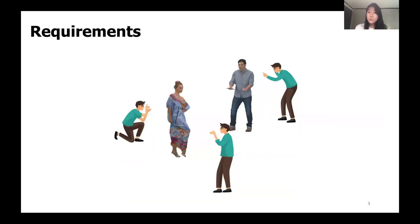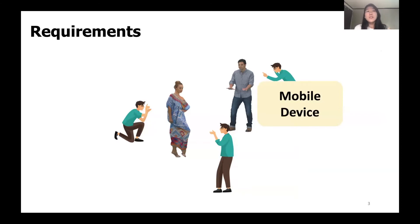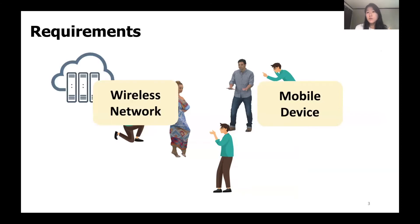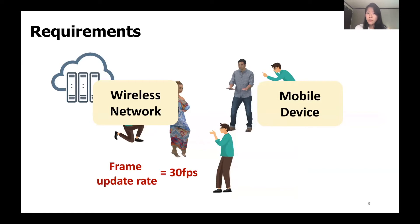For the users to move in 6 degrees of freedom, the devices should be fully mobile without being constrained by wires. The volumetric videos residing at the server have to be delivered through the wireless network to the client's device. Since the content is generated in 30fps, a typical video frame rate, the frame update rate at the client should also meet 30fps.